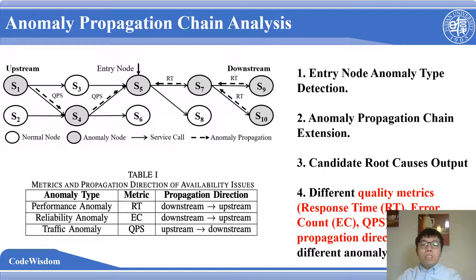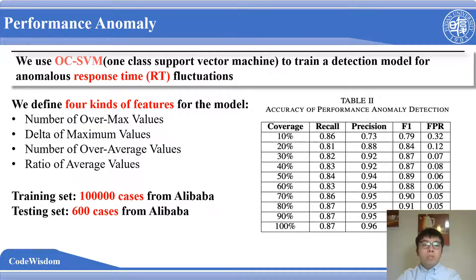It is important that for different anomaly types, the quality metrics and anomaly propagation directions are different. For example, as shown in the table, for performance anomaly, we use response time as a metric to detect the anomaly and find the root cause from downstream to upstream. For different types of anomaly, we train different models to detect them. For the performance anomaly, we use one-class support vector machine to train a detection model for anomalous response time fluctuations. We define four kinds of features for the model and collect 100,000 cases from Alibaba as a training set.